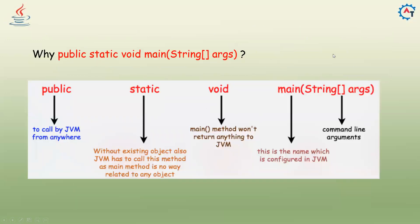This is one of the common interview questions: why is the main method 'public static void main'? Public is an access modifier — it gives full access, so any class from any package can access it. Because JVM needs to call it from anywhere, we declare it public. For static: there is no need to create an object to call this method. Without an existing object, JVM has to call the main method.